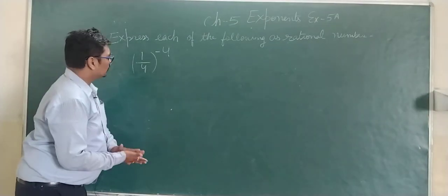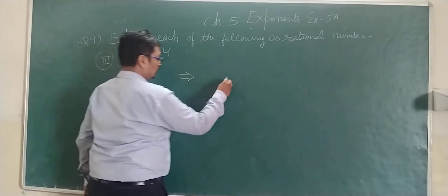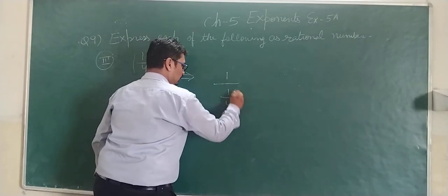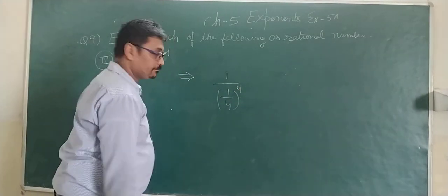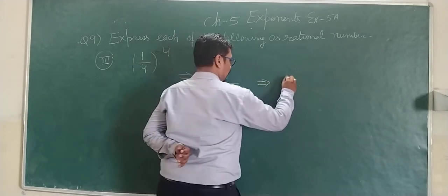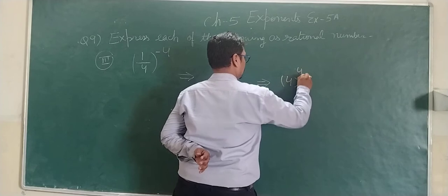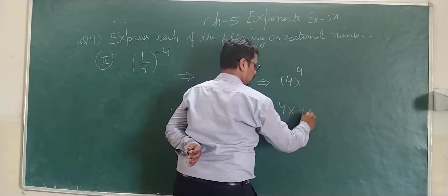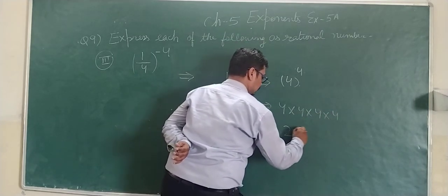Next: 1 upon 4 raised to the power minus 4. It can be written as 1 upon 1 by 4 having power 4, which becomes 4 having power 4. This is 4 multiplied by 4 multiplied by 4 multiplied by 4, which is 256.